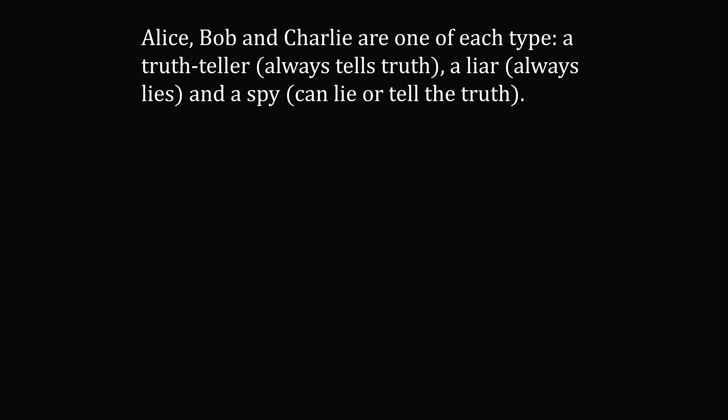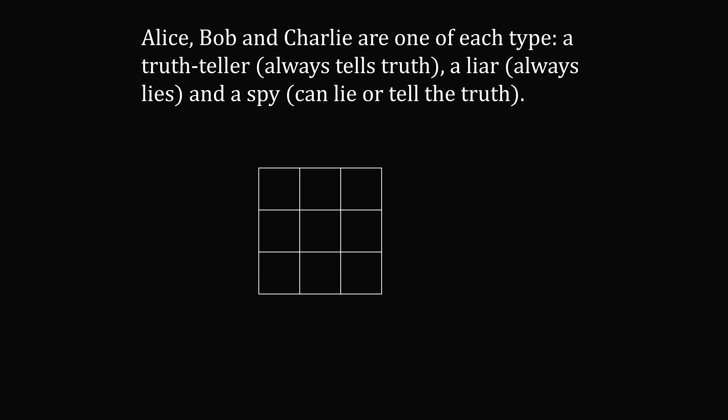Let's solve Problem 1. Here's one way to visualize the solution. Let's make a 3x3 grid where the rows are Alice, Bob, and Charlie, and the columns are truth teller, liar, and spy.